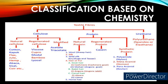Classification based on chemistry. Based on chemistry, the textile fibers are classified into cellulose-based textile fibers, protein-based textile fibers, urethane-based textile fibers, ester-based textile fibers, vinyl-based textile fibers, olefin-based textile fibers, and finally carbon-based textile fibers.